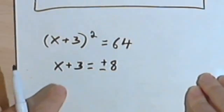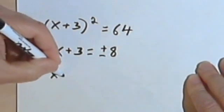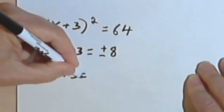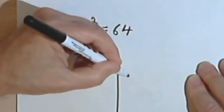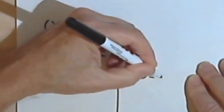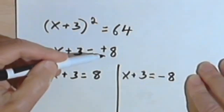And now I'll just break this down into two equations and solve each one. So one of the equations will be x plus 3 equals positive 8 and the other is going to be x plus 3 equals negative 8. That way I take care of the plus or minus sign.